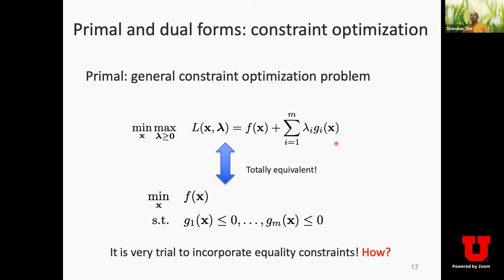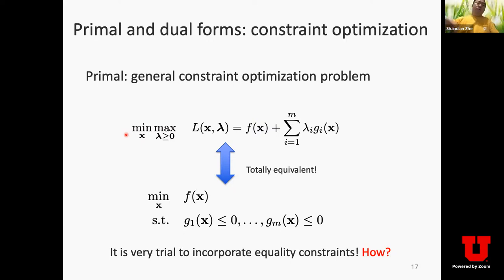Let us continue with support vector machines. In the last lecture, we introduced the primal and dual form for the general constraint optimization problem — some basic concepts in optimization theory. We introduced those basic concepts to understand how we convert the primal form SVM to the dual form. Then by solving the dual form, we can look at some structure of the SVM solution, and with that structure, see how we can extend SVM from linear classifiers to nonlinear classifiers.